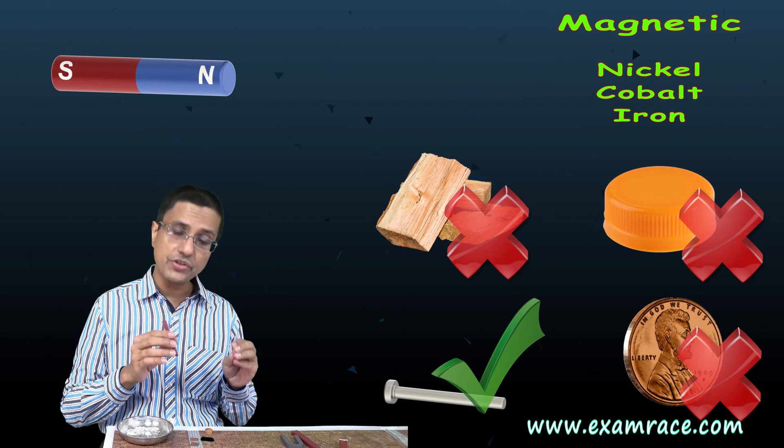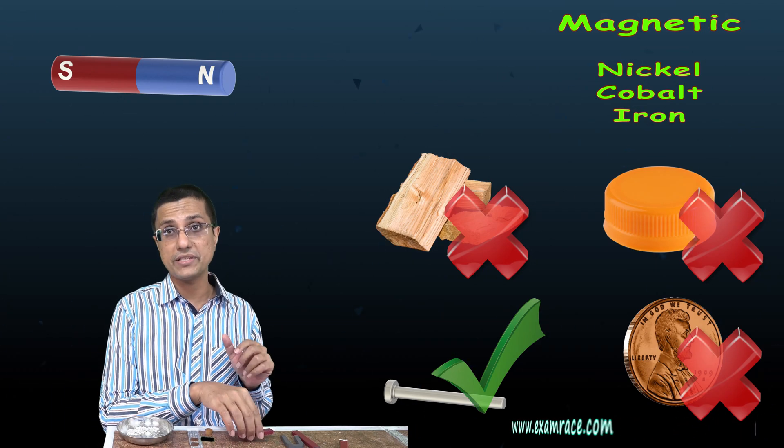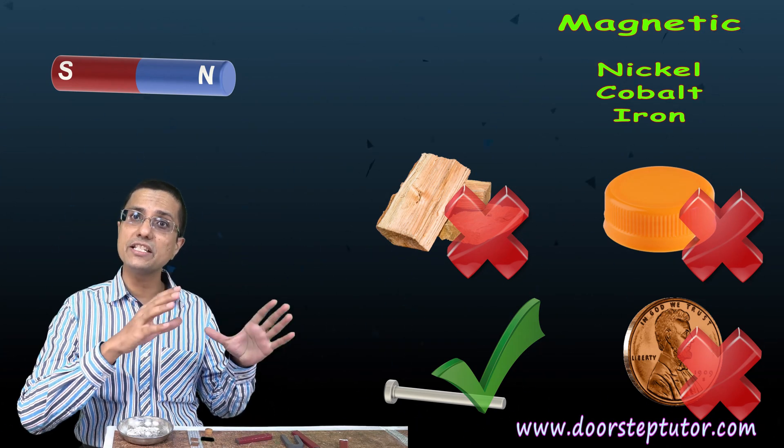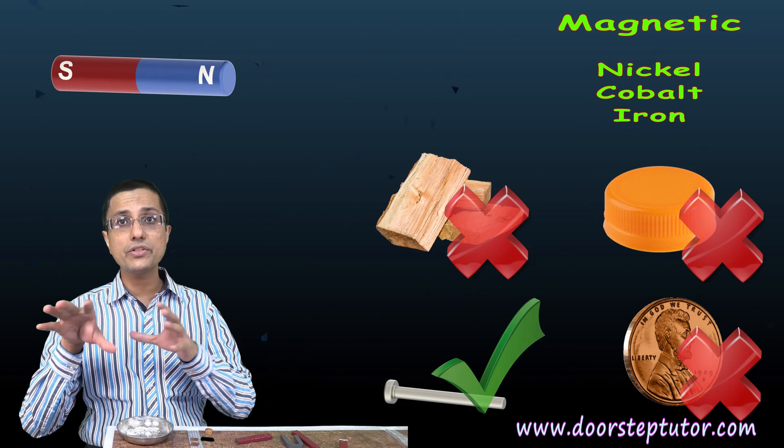Those are the only three metals which exhibit magnetic properties. Now this particular characteristic of materials, that only certain materials respond to magnetism and others do not, is put to good use in segregation.